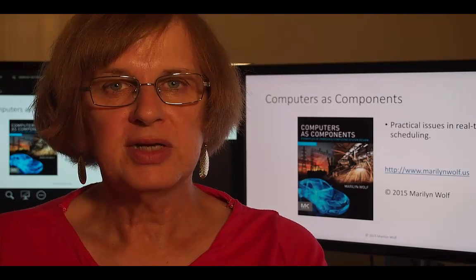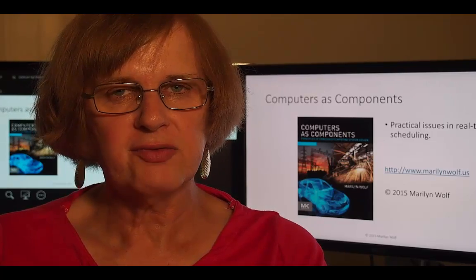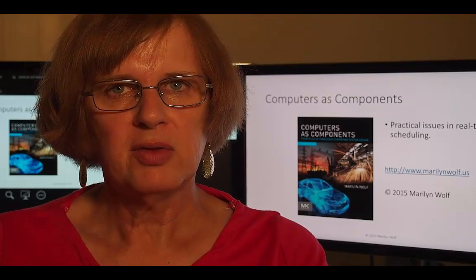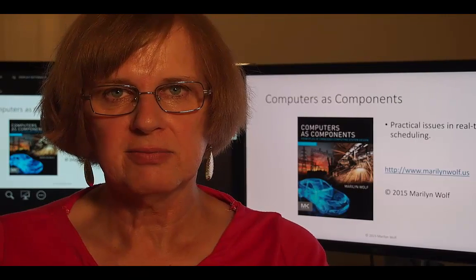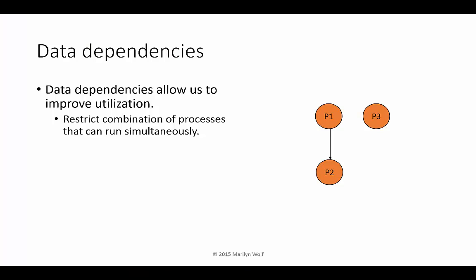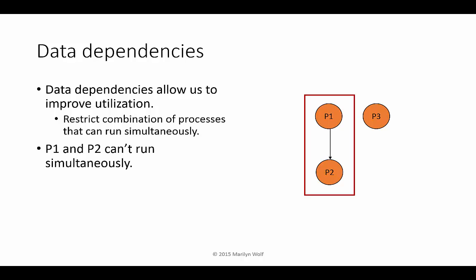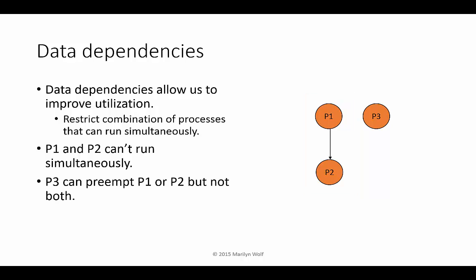RMS and EDF assume the tasks are independent, but that's usually not the case — they have to cooperate with each other to get useful work done. Some task sets have data dependencies between processes. For instance, P1 has to run and produce some data that is consumed by P2. Data dependencies help us restrict the combination of processes that can run at the same time. We know P1 and P2 can't run simultaneously, and we know P3 can preempt either P1 or P2, but not both.